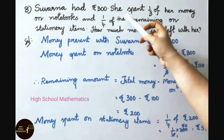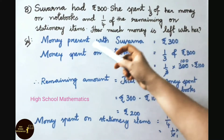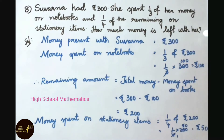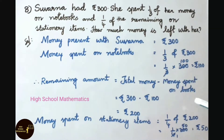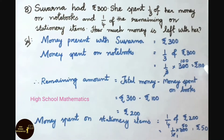Question number 8: Suverna had 300 rupees. She spent one third of her money on notebooks and one fourth of the remaining on stationary items. How much money is left with her? Money present with Suverna is 300 rupees. Money spent on notebooks is one third of 300, which equals 1/3 into 300. 3 ones are 3, 300 divided by 3 equals 100. Therefore, money spent on notebooks is 100 rupees.